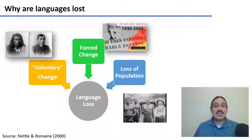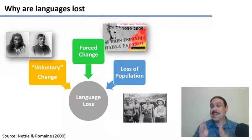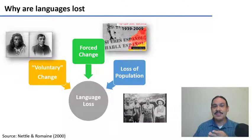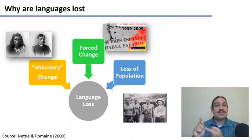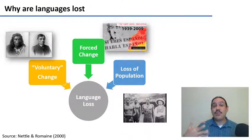Another way languages are lost is through forced change by law, for example from the government. In Spain, from 1939 to 1975, a dictator demanded that Spain only use the Spanish language for its government. However, Spain is a very multilingual territory with languages like Basque and Catalan. Until 1975 in Catalonia, it was illegal to have schools in Catalan, to offer any government services in Catalan, and you could go to jail for singing in Catalan. These laws enacted a forced change.